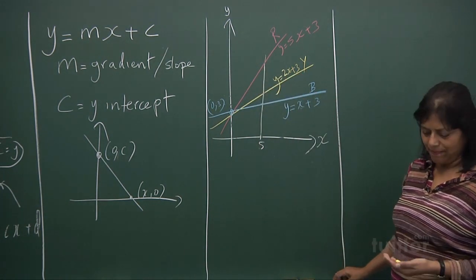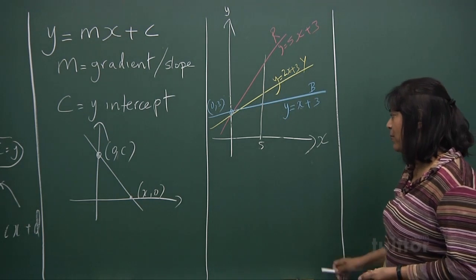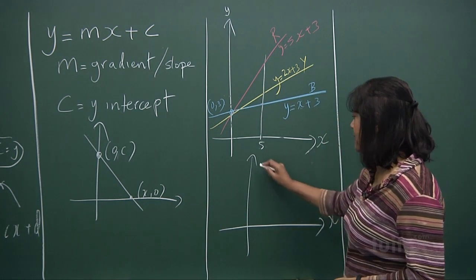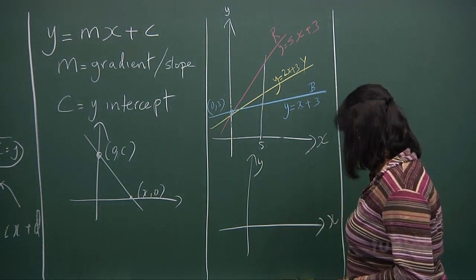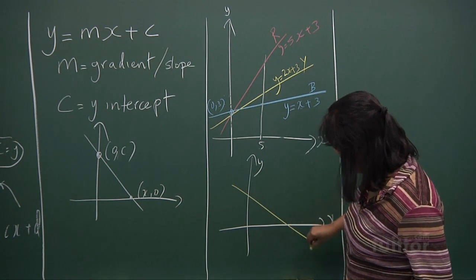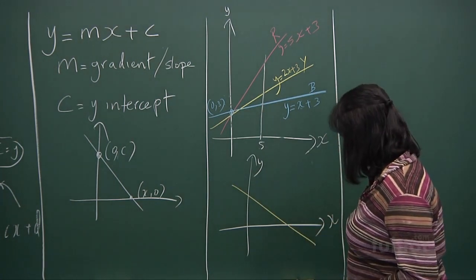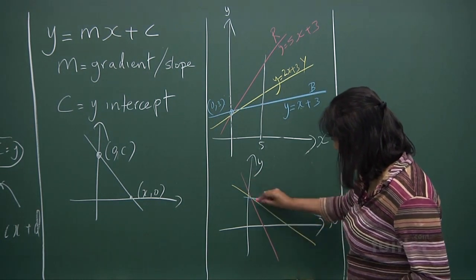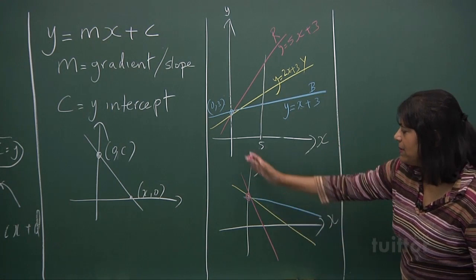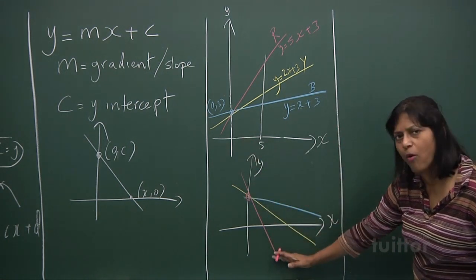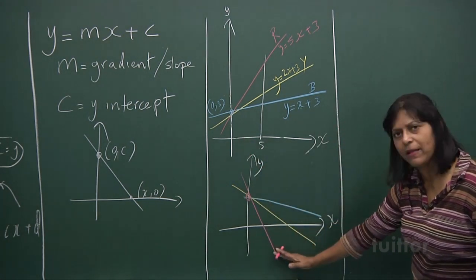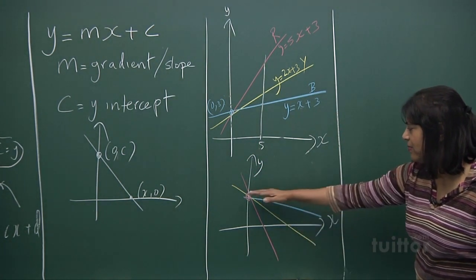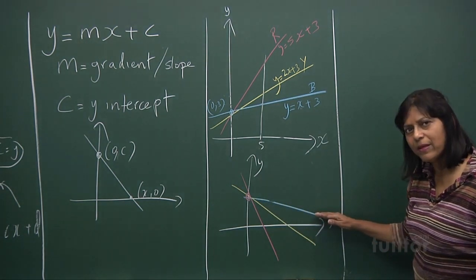Now when we talk about a negative slope, what does it mean? If I have a slope this way, another line here, another line here, and another line here, they all have the same point. But this is the steepest drop—the negative slope drops very fast. This drop is not so fast, and this drop is slower.